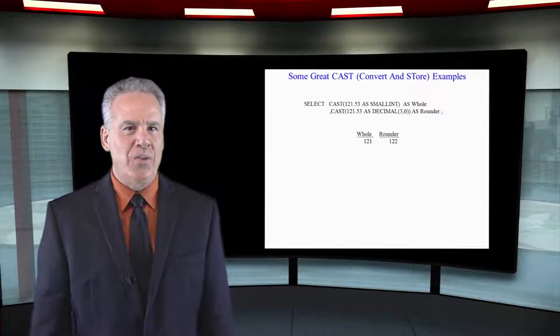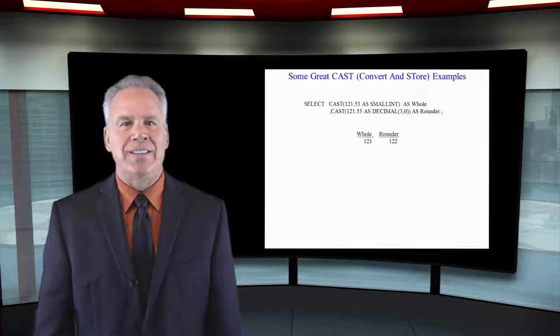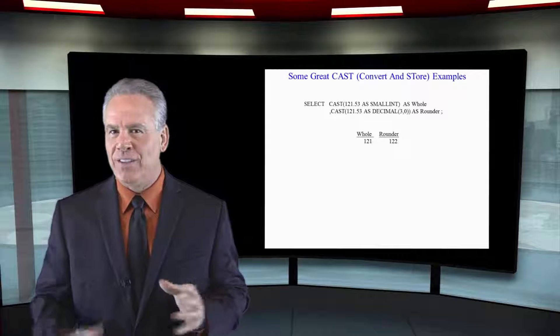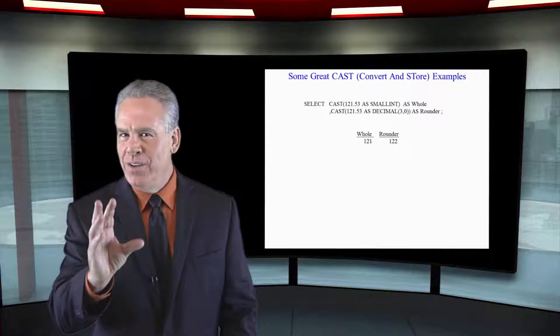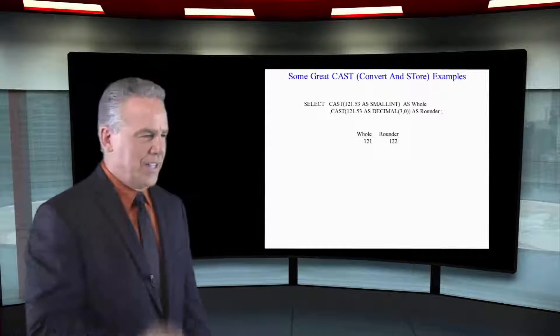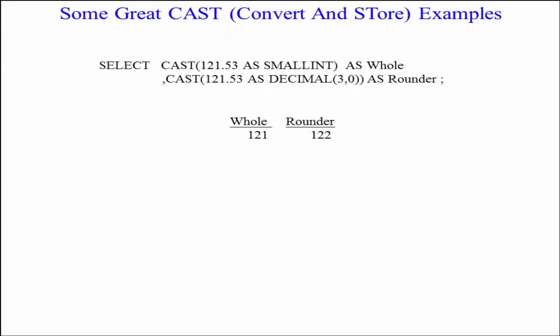Most things are going to make a lot of sense to you when you CAST them, but there's a few things that I want to show you that could throw you off your game just a little bit here. Take a look at this. We're going to CAST the number 121.53 as a small integer, and that's going to take it and literally just chop the decimals off the end of it, because we don't have any decimal points here.